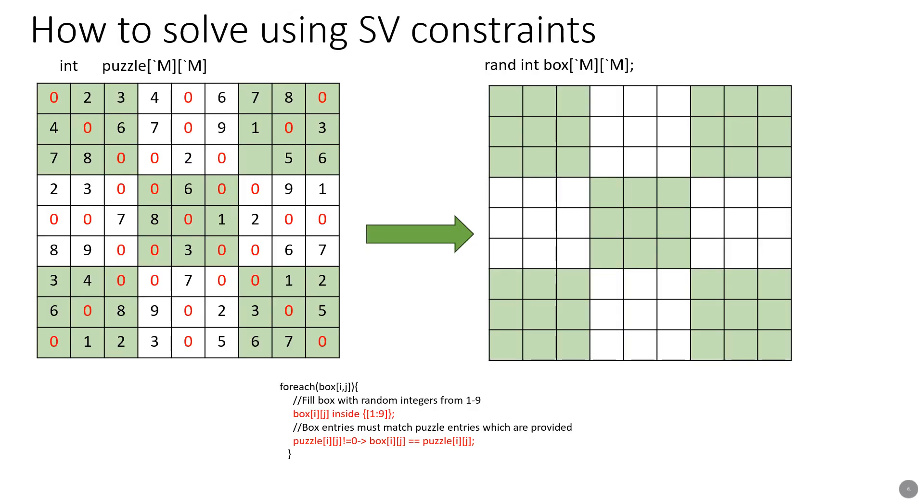To solve this problem using System Verilog constraints, we have to create a two-dimensional matrix of integers with m rows and m columns. We create a two-dimensional matrix and populate that matrix with the numbers that are already provided, and then we pad some zeros to show that there are missing numbers. Then we create a random two-dimensional matrix of the same size.